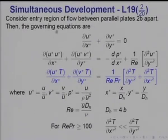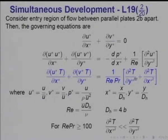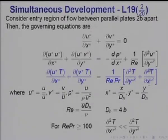We consider by way of an example the entry flow between two parallel plates. Then the governing equations will be: the continuity equation, the momentum equation, and the temperature equation. If we make boundary layer approximations, and when Reynolds times Prandtl is greater than 100 — as you will recall from lecture number 17 — temperature gradients in the y-direction are much greater than in the x-direction. So this term would be dropped, assuming that Reynolds multiplied by Prandtl number is greater than 100.